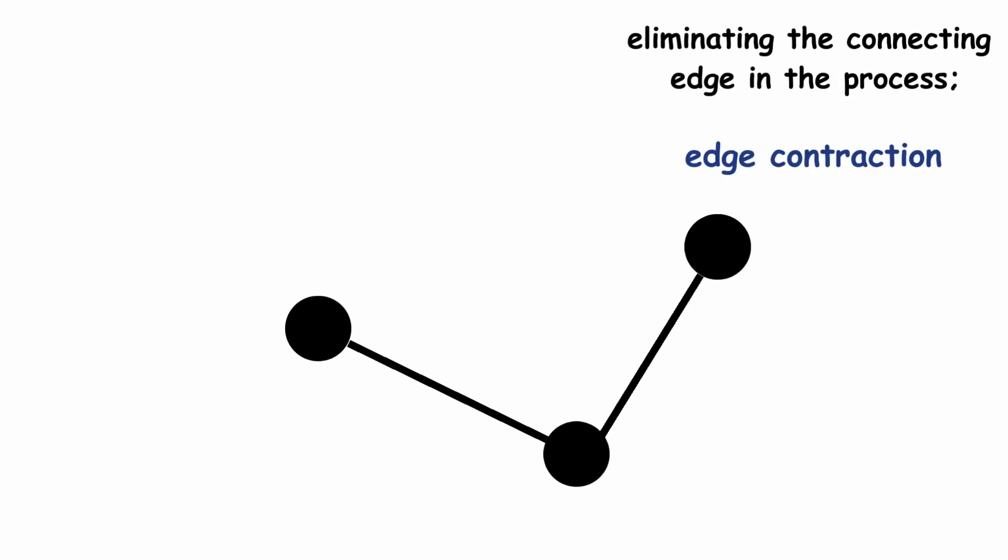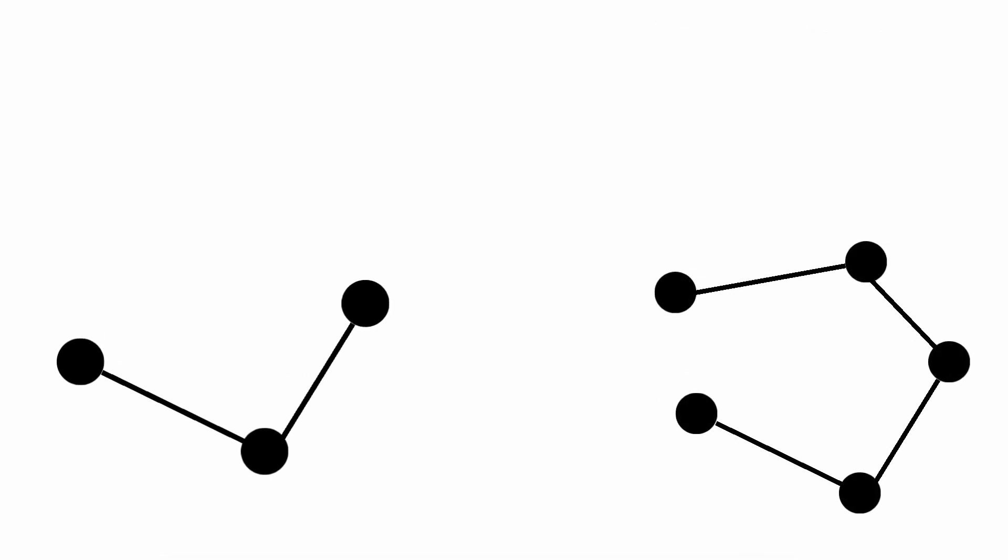Now let's take a graph and start destroying the vertices and edges we don't like. We can also merge two connected vertices into one, eliminating the connecting edge in the process. This is called edge contraction. Doing these things however we like, our resulting graph is called a minor of the original graph.